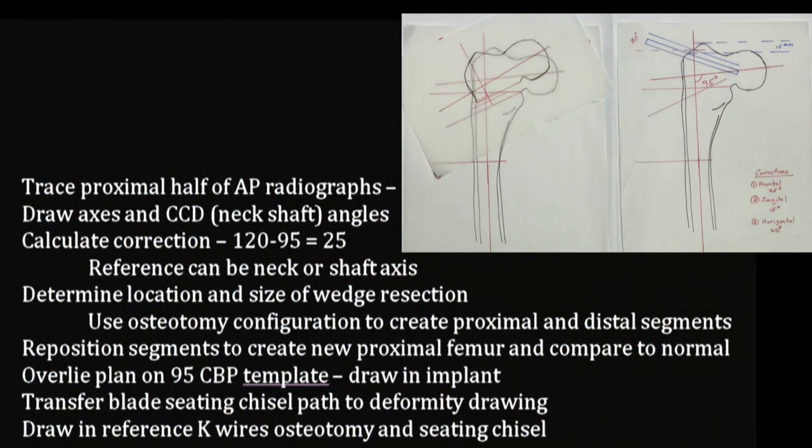Our summary: in the next half hour we're going to concentrate on the plan, with the pertinent point bullets here. Your table instructors will be there to help you. Remember, there are essentially an infinite number of different osteotomies which will provide a correction in the frontal plane, and only a few of them are going to be relatively easy to execute in the other dimensions. Let's go ahead.